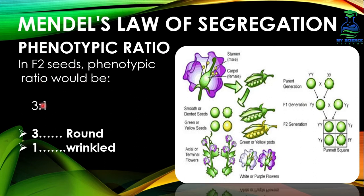Let's see the phenotypic ratio. In the F2 seeds, the phenotypic ratio would be 3 to 1, meaning 3 round and 1 wrinkled seed. This monohybrid cross can be observed through this diagram, where capital Y represents the round seed shape and small y represents the wrinkled seed shape. In the F2 generation, 1, 2, 3 are round seed shape and 1 is wrinkled seed shape, giving a phenotypic ratio of 3 to 1.